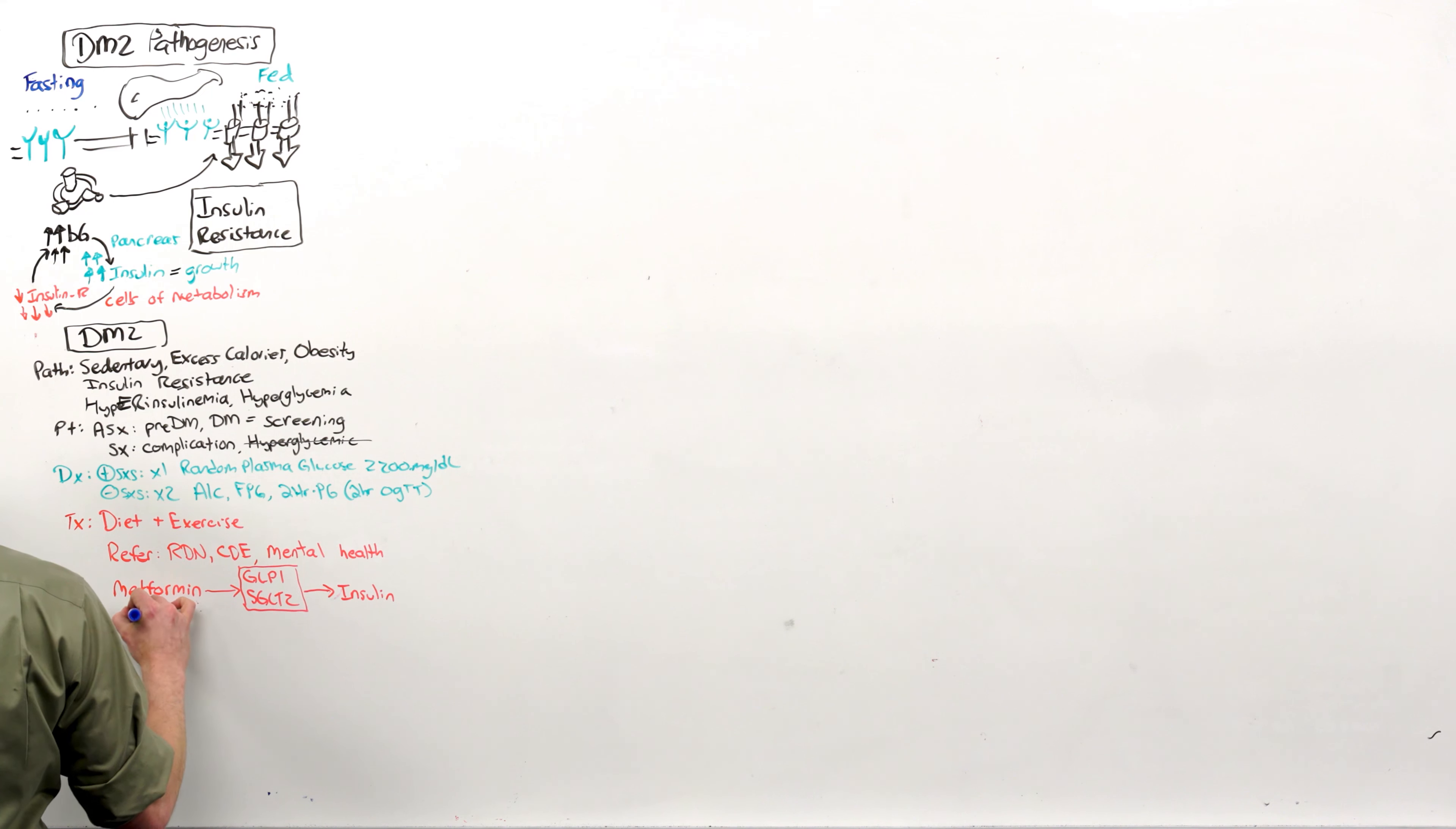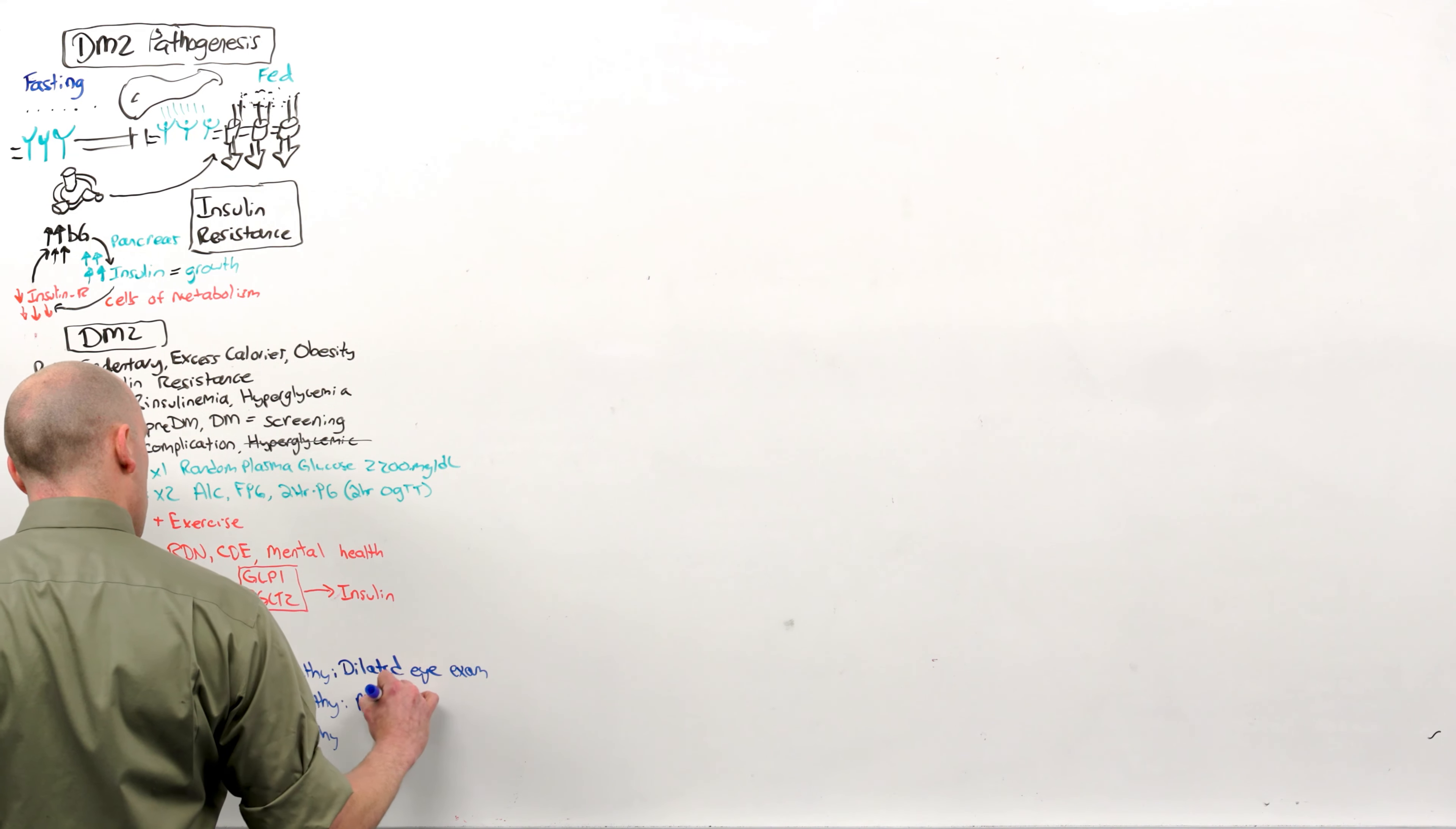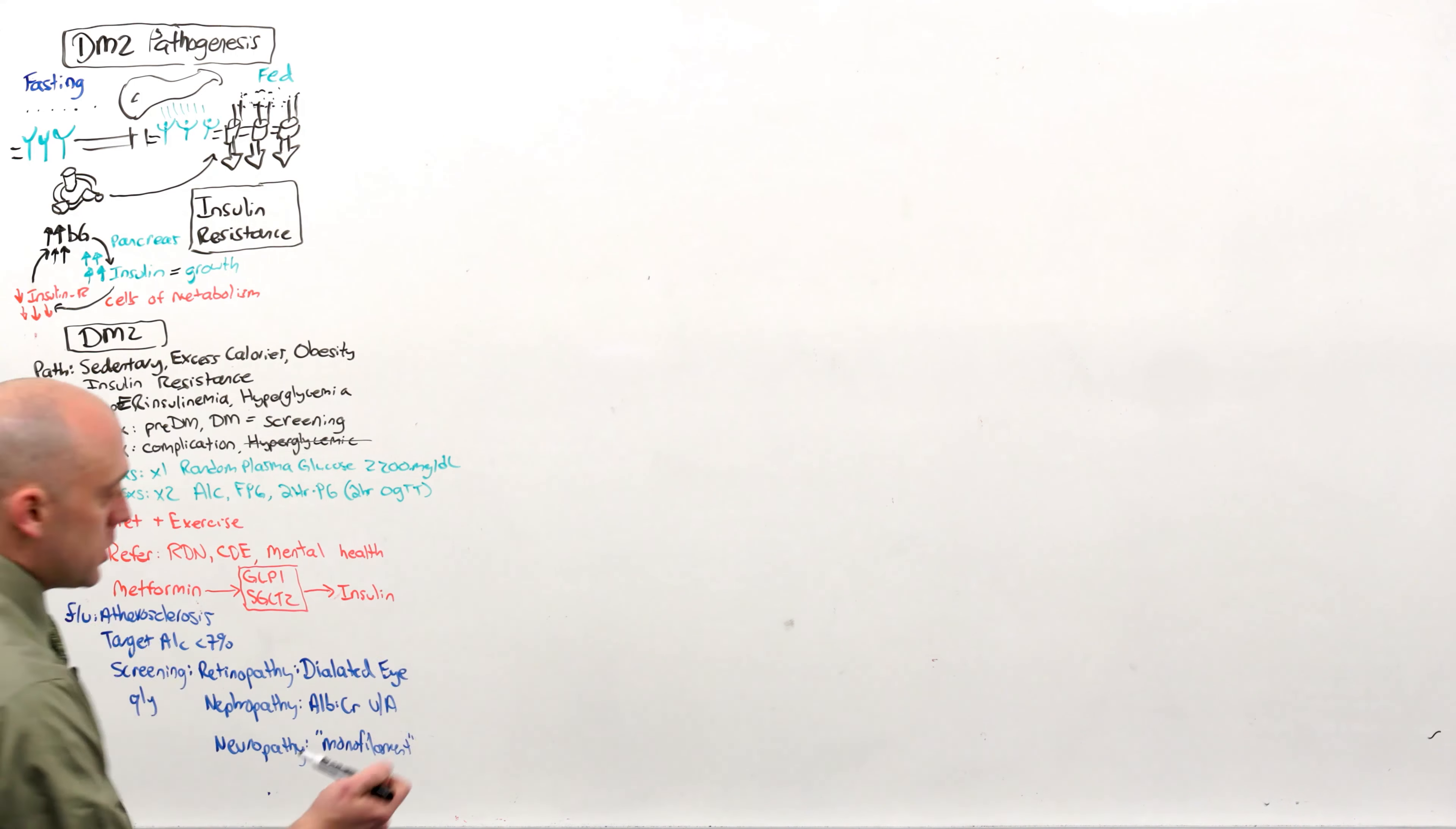Diabetes is an atherosclerosis equivalent. The target A1c is less than 7% in all comers. And then there needs to be screening. Every year, screen for retinopathy, nephropathy and neuropathy. Retinopathy with a dilated eye exam. Nephropathy with an albumin to creatinine ratio obtained from urinalysis. And neuropathy with a, quote, monofilament test. Sensory exam for the feet. This is the takeaway. You have to know this. Now let's get into some more details. Starting with the complications. The complications caused by a chronically elevated blood glucose.